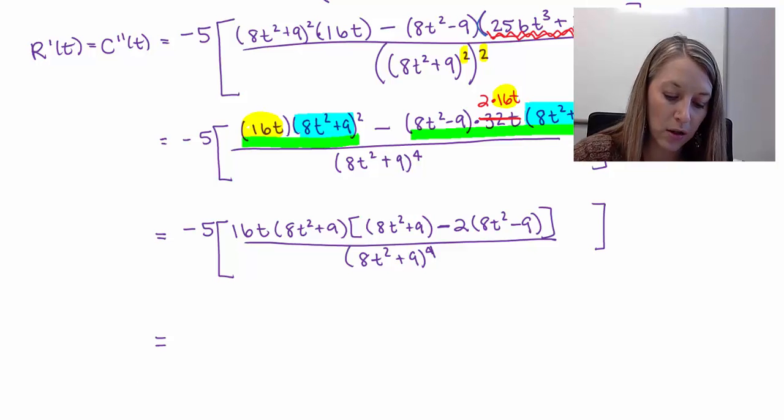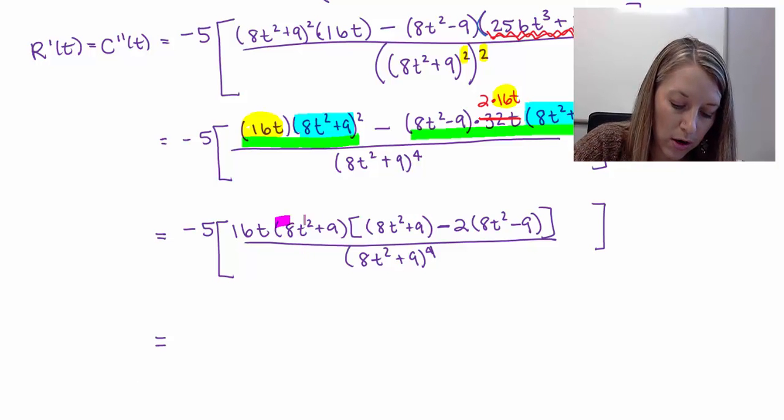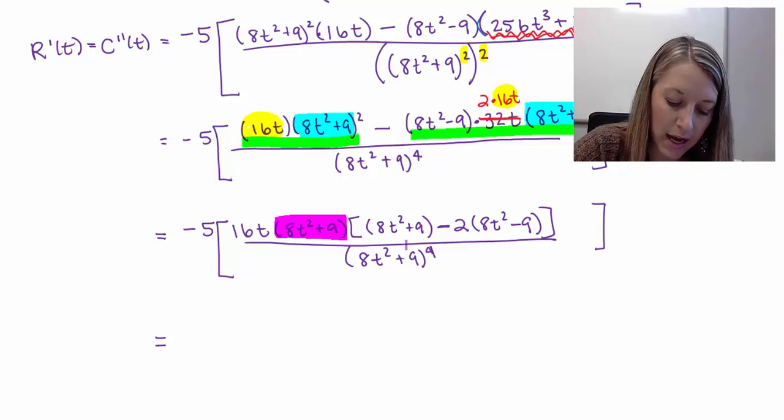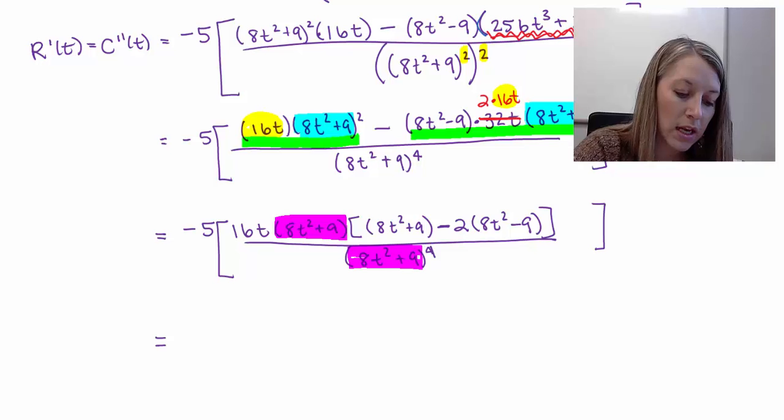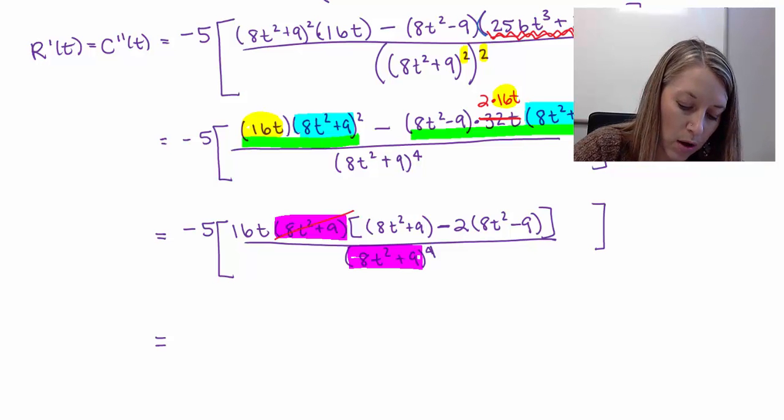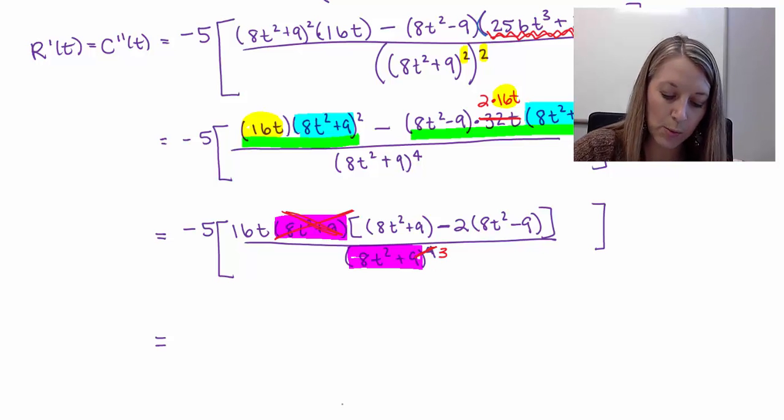And in the denominator, I have (8t² + 9)⁴. Looks quite messy at this point, but I promise it will get a lot better. So a couple of ways that this will get a lot better. Notice in my numerator I have an 8t² + 9, and I also have an 8t² + 9 in the denominator. So I can cancel one of those out. So that will eliminate this one here, and that will take this one down to an exponent of 3.